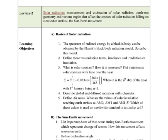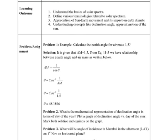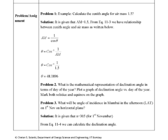For example, what is the objective of this lecture? What are the basics of solar radiation? The sun and earth movement, possible formulas. What is the learning outcome? The idea of this lecture is to understand the basics of the solar spectrum, define various terminologies related to solar spectrum, appreciate the sun-earth movement and its impact on earth's climate, and understand concepts like the declination angle and apparent motion of the sun. These are the objectives of this lecture.